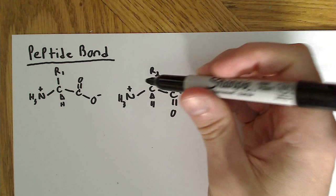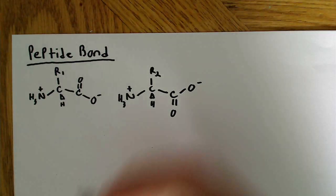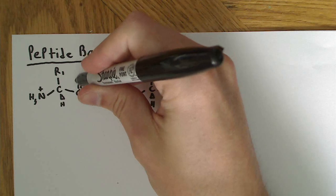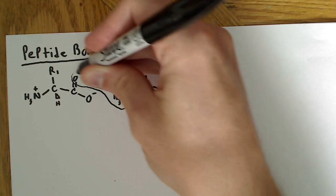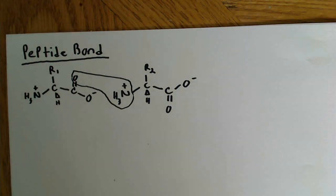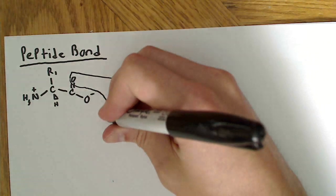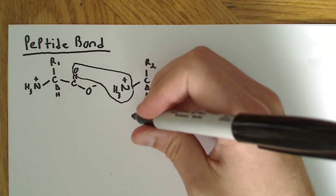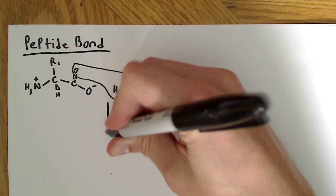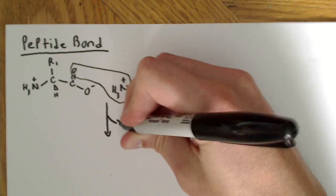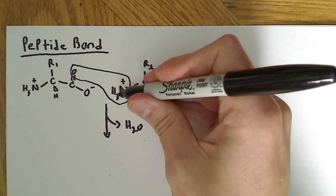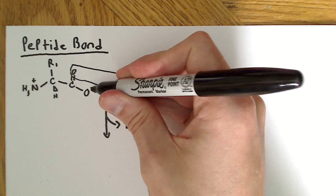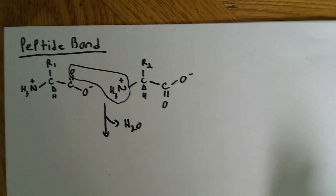Basically, what winds up happening is this area here is what's going to be involved in forming the peptide bond. What we can draw here to kind of demonstrate this is here we're going to lose water, because that's what happens when you form the bond. You lose water. You lose two hydrogens over here and one oxygen over here. And that's how it's formed.